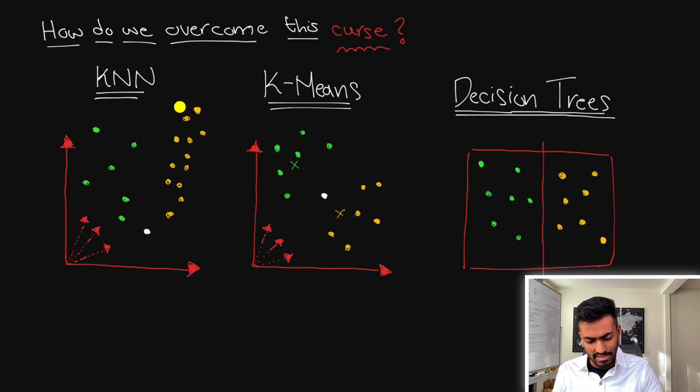However increasing the number of data points is actually a very tough thing to do, and so typically what we do is dimensionality reduction. We try to reduce the number of dimensions along which all of these points are projected and thereby minimize the effect of the curse itself.